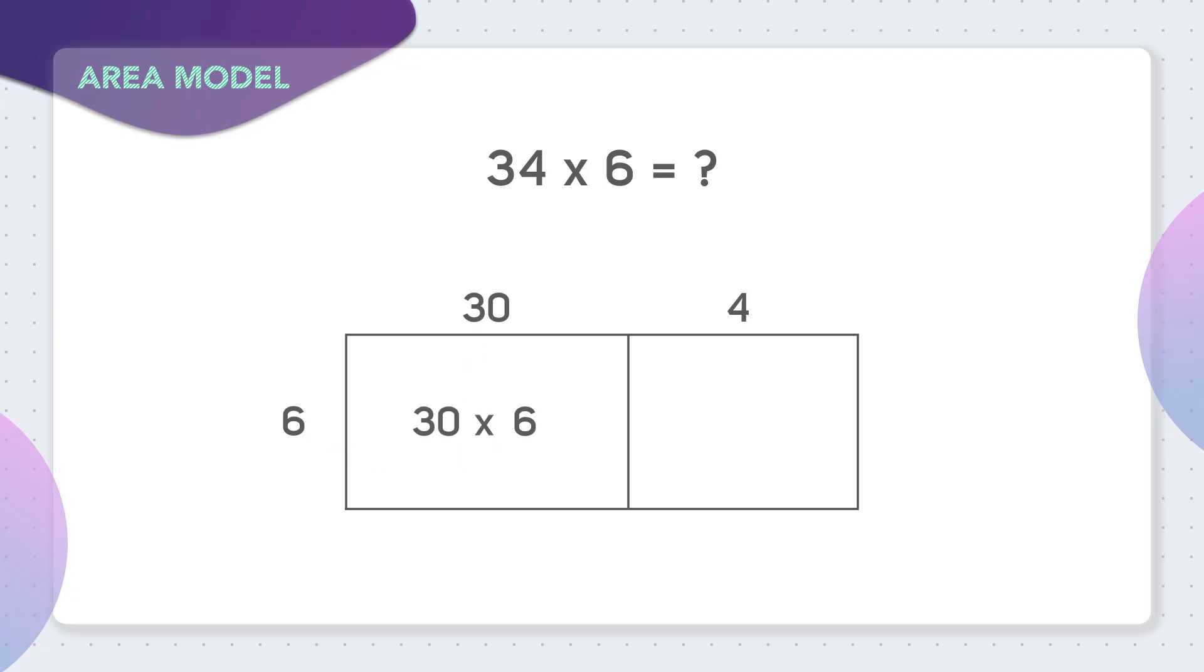What does 30 times 6 equal? If you ignore the zero in 30, you can multiply 3 times 6 to get 18. Then you just add in that one zero you left out, so 30 times 6 equals 180.